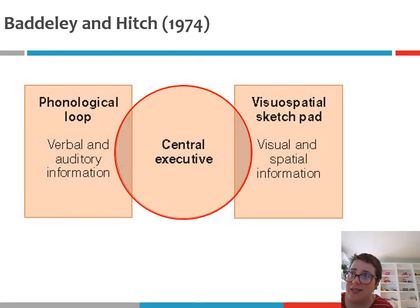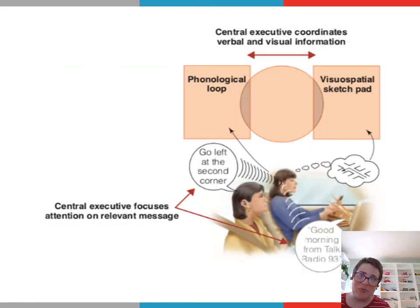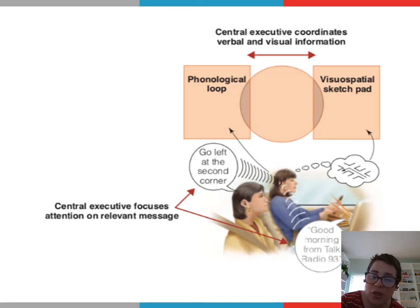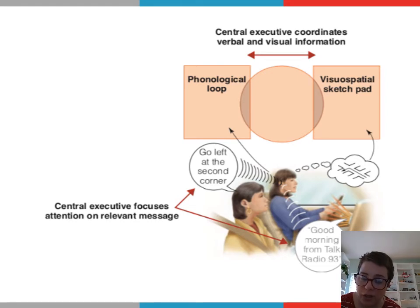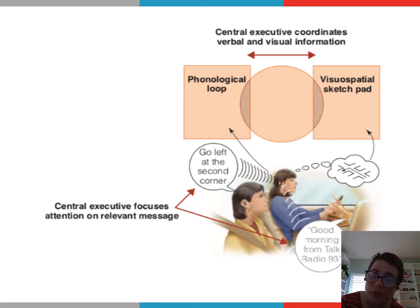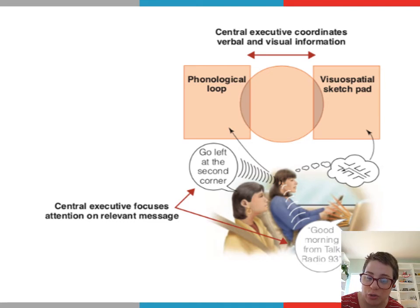Let's look at a diagram from your book to illustrate this. In this hypothetical situation, you are driving in an unfamiliar city — a town you've never been to before — and you decide you want to enjoy a meal at a restaurant you've never been to before. As you're driving, your friend is reading you directions to get to the restaurant, and you are also listening to talk radio. As you attempt to drive and listen to directions, your working memory is doing different things.